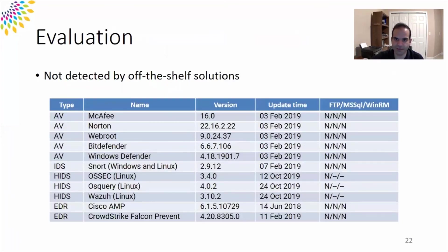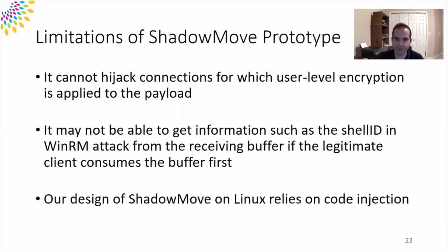We tested ShadowMove against the top five antiviruses, three IDSs, and two EDR systems, and none of them were able to detect ShadowMove's operation. ShadowMove also has some limitations. First, it cannot hijack connections that implement user-level encryption like SSH. Second, in the WinRM case, ShadowMove should duplicate the socket before the start of the negotiation phase so that it can learn the shell ID. Third, our current prototype on Linux relies on code injection to duplicate a socket.